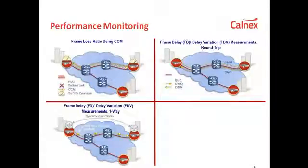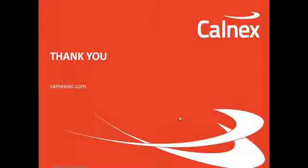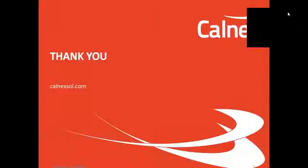So discovering the network, checking for connectivity and faults, reporting and responding to those faults, and monitoring performance parameters such as loss, delay, and delay variation — this is what OAM does in a network. This has been a presentation by Calnex Solutions.